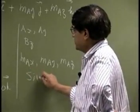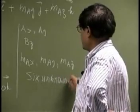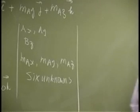As a total, you really have six unknowns. Those are the total number of unknowns we are looking for in this particular problem.